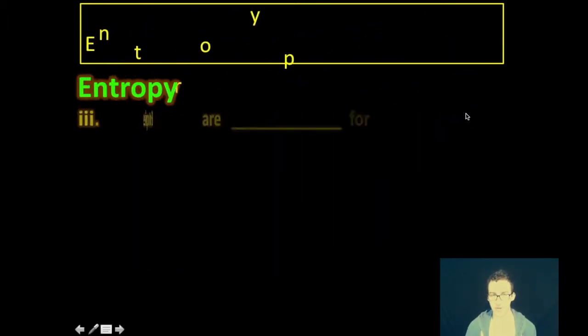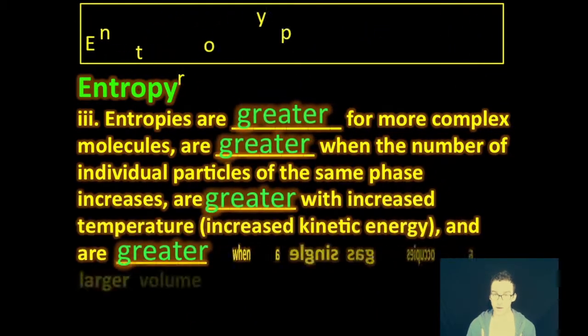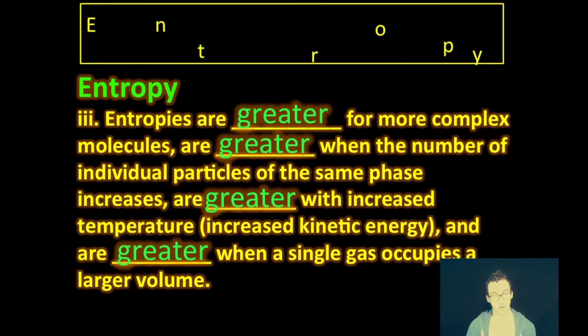Third thing to keep in mind as you think about entropies, they are greater for more complex molecules. In other words, the bigger and more electrons that your molecule has, the more disorder that particular molecule will possess, as opposed to particles or molecules that have fewer electrons. Entropies are greater when the number of individual particles in the same state increases. So, more things are going to create more disorder. They're going to be greater with increased temperature. So, the greater the temperature, the more kinetic energy, the more disorder. And there's also going to be a greater amount of energy when a single gas occupies a larger volume, more space for them to spread out and to be more disordered.